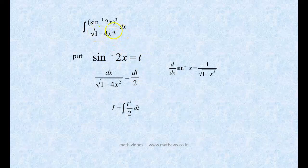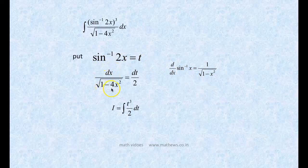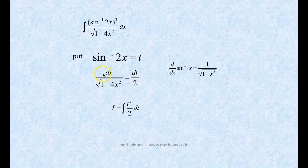Next problem: integral of (sin⁻¹(2x))³ / √(1 - 4x²) dx. We substitute t = sin⁻¹(2x). The derivative of sin⁻¹(2x) with respect to x is 1/√(1 - 4x²) times 2, giving 2 dx on the left side. Differentiating the right side with respect to t gives dt, so we get 2 dx = dt.